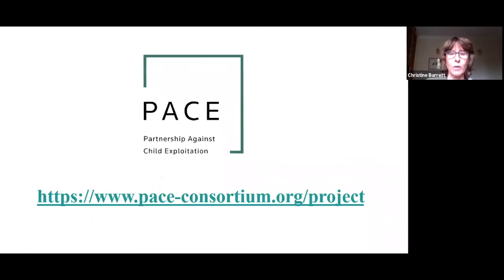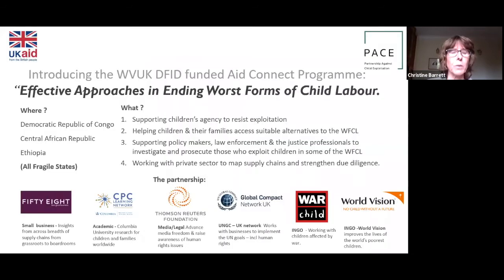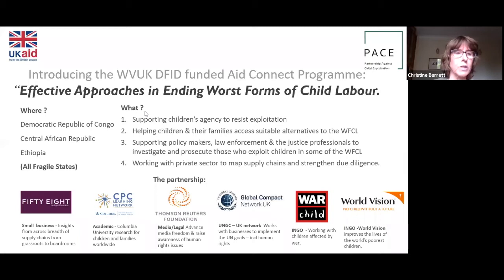Thank you Audrey. You've asked us to come and speak about the consortium and the work that we're doing. If you want to Google 'PACE consortium' there's a really nice website with lots of pictures and information. This is a project that's been implemented for eight months — we had a year of co-creation — funded by the UK Department for International Development. The aim of the project is to find effective approaches in ending the worst forms of child labor in three African countries: the Democratic Republic of Congo, Central African Republic, and Ethiopia — all considered fragile states where it's the most difficult for a child to grow up.